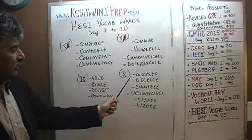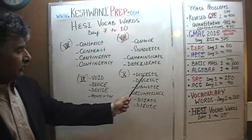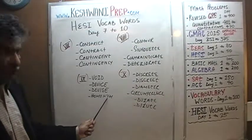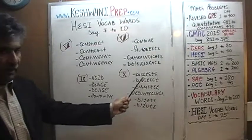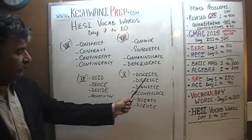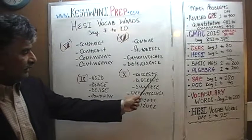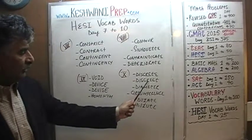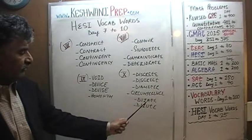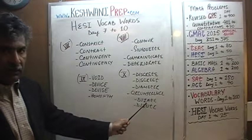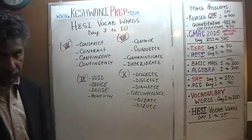And finally, on day number 10, we learned two words which are homonyms — pronounced the same way but with different meanings: discrete with R-E-T and discreet with R-E-E-T. We also covered diameter, circumference, and finally dilate and dilute.